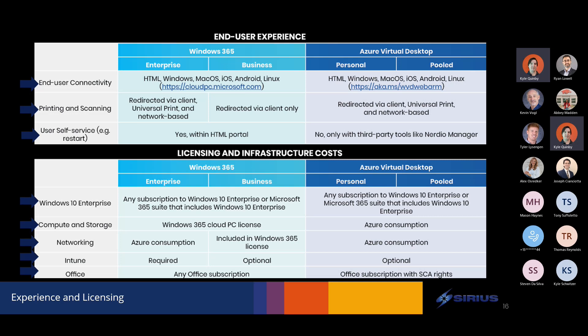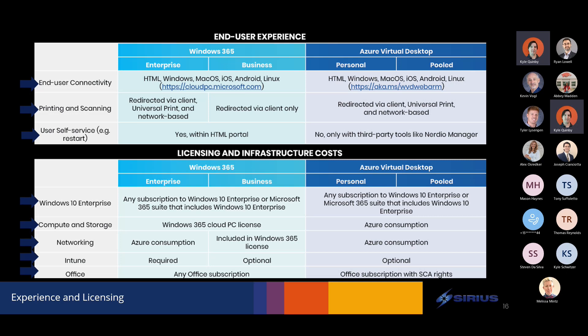On compute and storage: the Windows 365 cost is all-in — that's a higher cost, but it's including the compute and storage with your license, trying to make it as simple as possible at a slightly higher cost. With AVD, you're paying for your consumption. You have the rights if you have one of those M365 licenses to use the service without having to pay Citrix per-user or Horizon per-user licensing — you just own the licensing to leverage that Microsoft access plane. But you're still going to pay for the actual Windows 10 multi-session hosts running to support your workload.